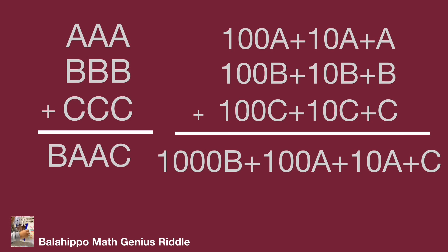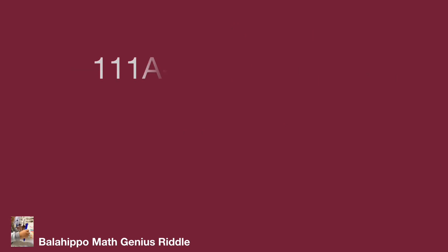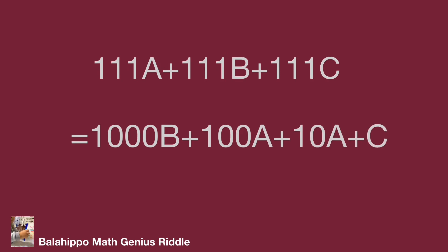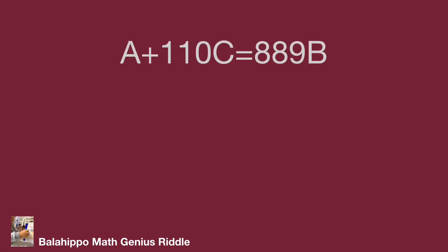Simplifying the upper equations, we get 111A plus 111B plus 111C equal to 1000B plus 100A plus 10A plus C. Simplifying further gives a new equation: A plus 110C equals 889B.